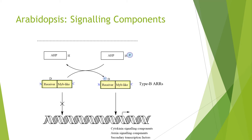As a phosphate is transferred from the histidine on the AHP to an aspartate on the type B ARR receiver domain, this removes the inhibitory activity of the receiver domain. This allows the MYB-like DNA binding factor to bind DNA, enabling type B ARRs to alter transcription.